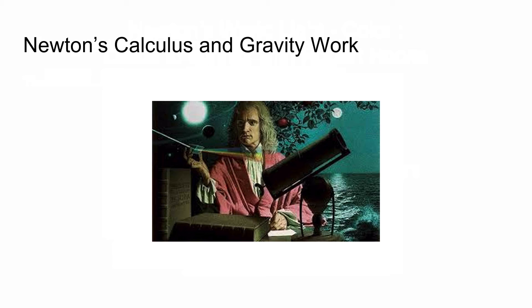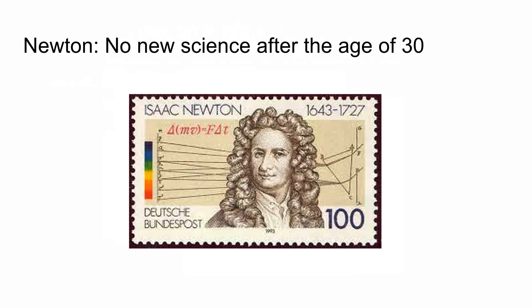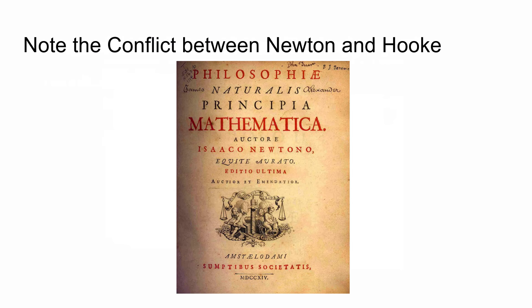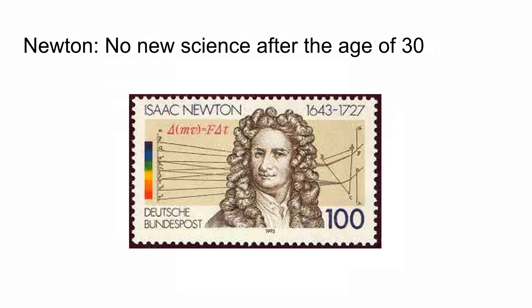He also invented calculus and did work on gravity. Newton was lauded throughout his life as an amazing scientist, and he was. His working style was so different from that of Hooke. They note that Newton did very little new science after a certain age, and he got into all sorts of other interesting and bizarre habits after that.